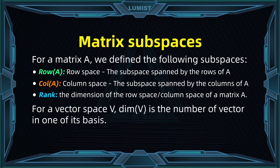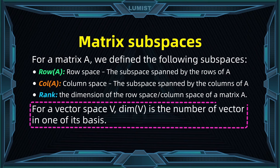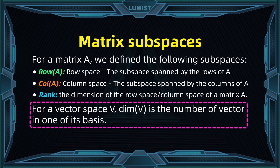Let's do a quick reminder. Each subspace has its basis, which is a set of linearly independent vectors that can span the subspace. The dimension of a subspace is simply the number of vectors in a basis. So the rank of a matrix is simply the number of linearly independent columns or rows of a matrix.